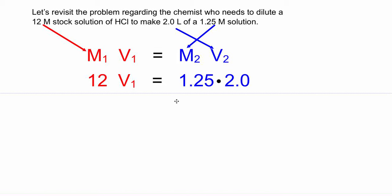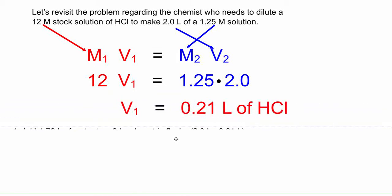Doing the basic algebra and solving for V1, we find that we need 0.21 liters of hydrochloric acid to dilute. So we're going to start with 0.21 liters and add enough water to bring the final volume up to 2 liters.